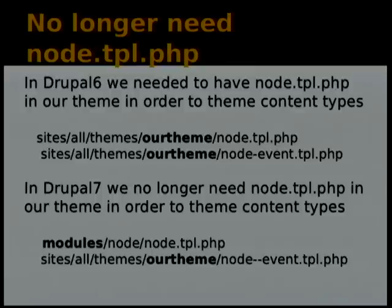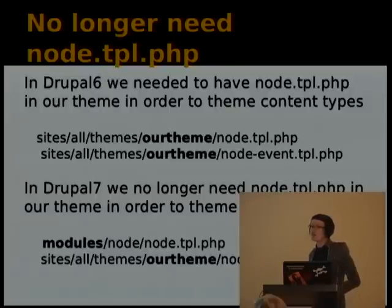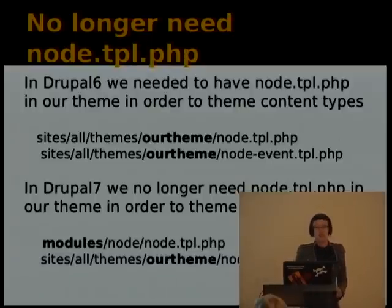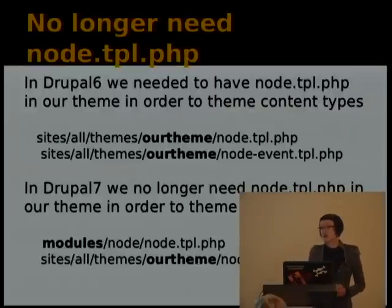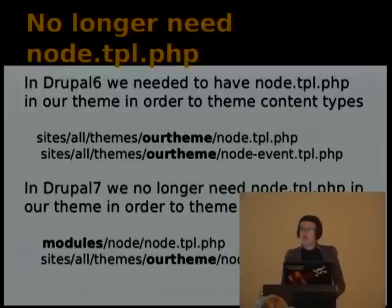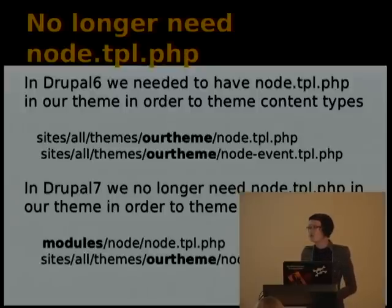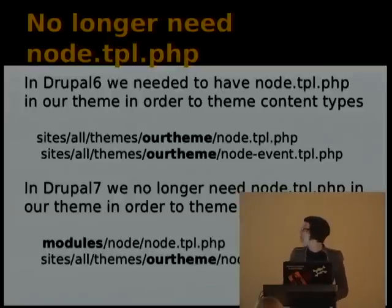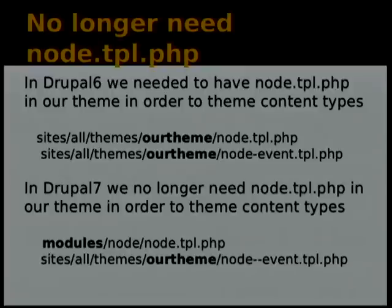Node.tpl.php is no longer required in your theme. In Drupal 6, if you wanted to theme a content type you had to have node.tpl.php in your theme to do node-event. In Drupal 7 you no longer need that — you can use it from core and simply theme your own. So it's still going to call node from modules, but then look at your node-event template to actually theme it.